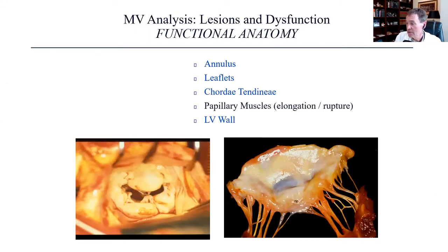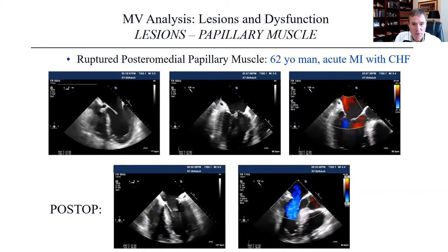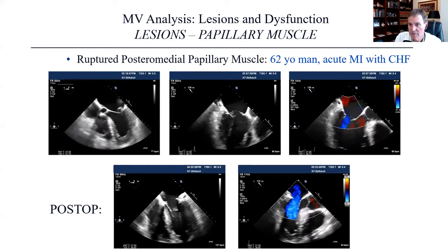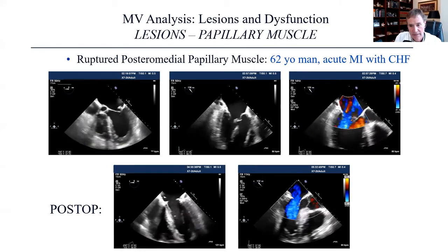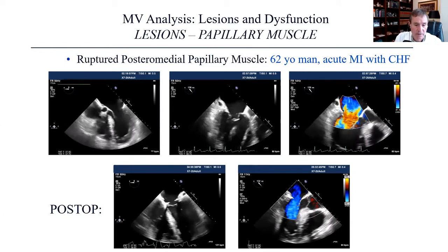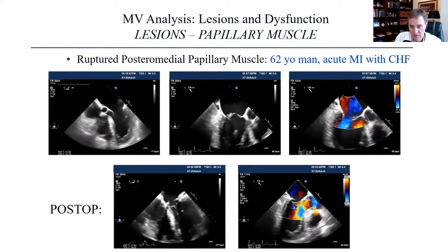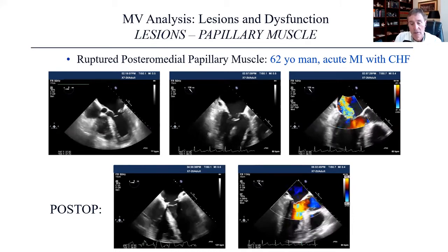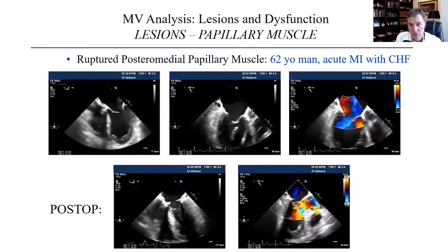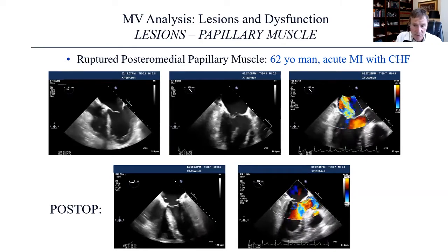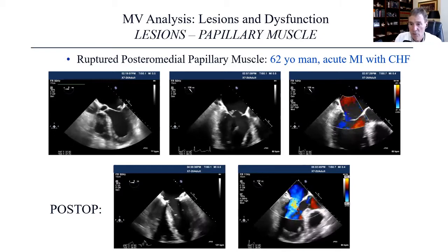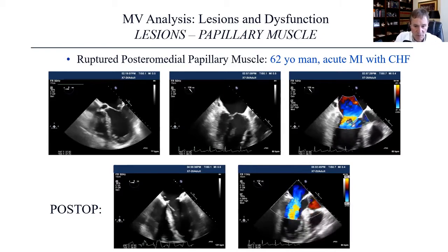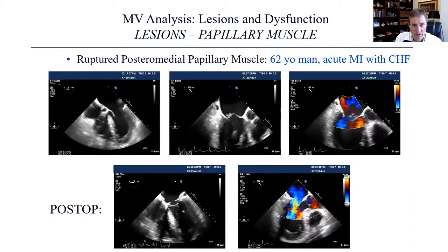Let's look at the papillary muscles. Here's a ruptured posterior medial papillary muscle in a 62-year-old gentleman with acute myocardial infarction — it creates just a massive acute jet. This is a sick patient and these can't really wait; this is the one mitral valve operation you may need to do in the middle of the night. We were able to reconstruct that papillary muscle and buttress it with sutured Gore-Tex neochords, repairing the valve and sparing the patient a mitral valve replacement.